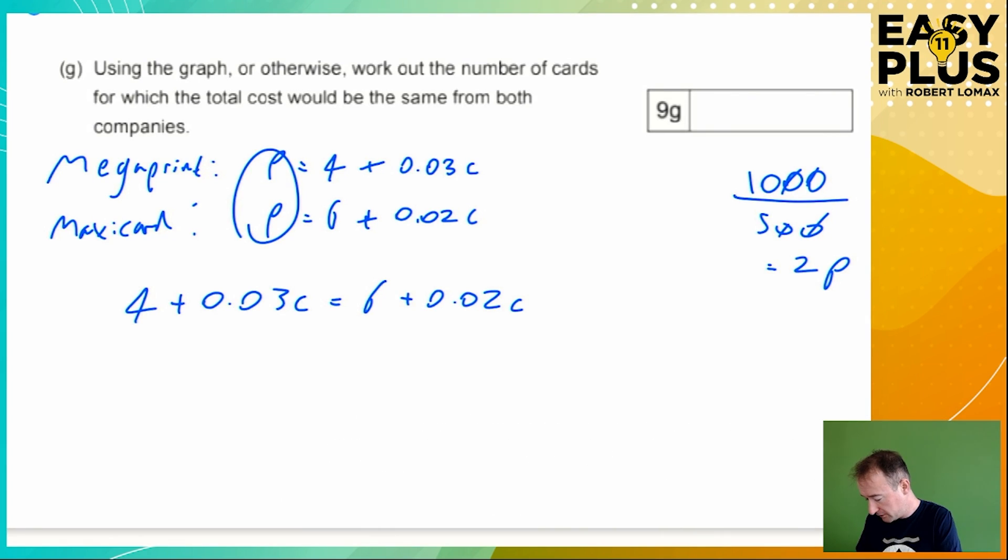So we've got 0.03c on this side and 0.02c on the other side. We want all our c's in one place. So in the end, we're just going to have a nice c equals something or other as our solution. We want to have all the c's on one side. We can either take away 0.03c from both sides or take away 0.02c from both sides. We want to stay with the positive value. We don't want minus something c. So let's take away 0.02c because we can take that away from 0.03c and still have something left.